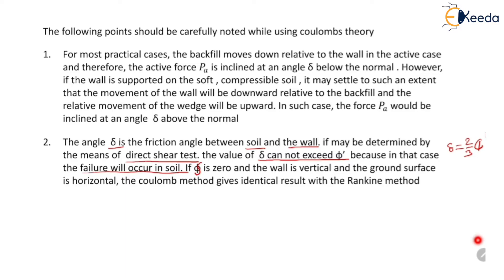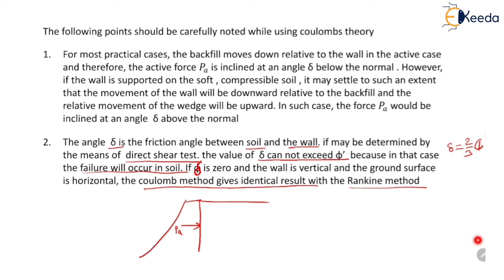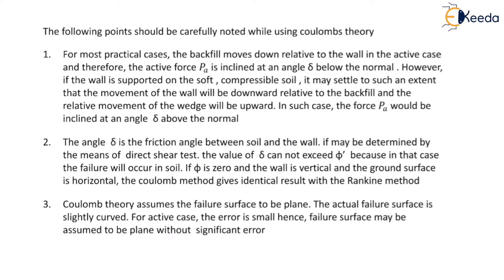If angle delta is zero and the wall is vertical and the ground surface is horizontal, then the Coulomb method gives identical results to the Rankine method. Coulomb's theory assumes that the failure surface is a plane, whereas the actual surface is slightly curved.